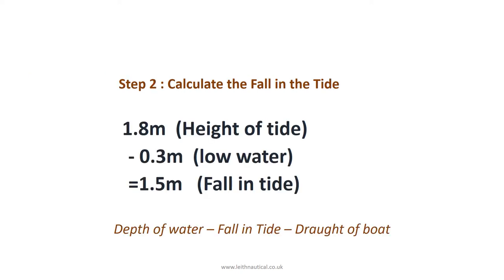For Step 2, we now calculate the fall in the tide. We take our 1.8 metres — that's the height of tide when we arrived — and we take away the next low water height, 0.3 metres. And that gives us a fall in the tide of 1.5 metres.